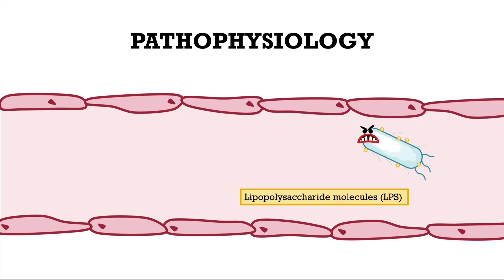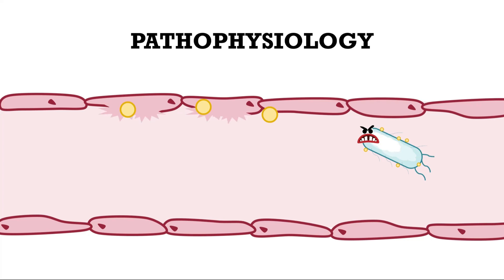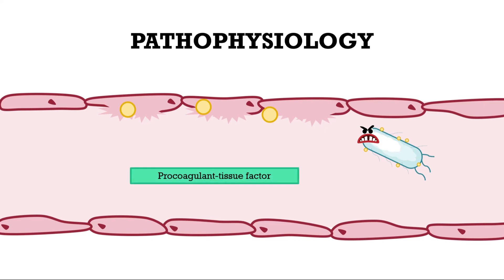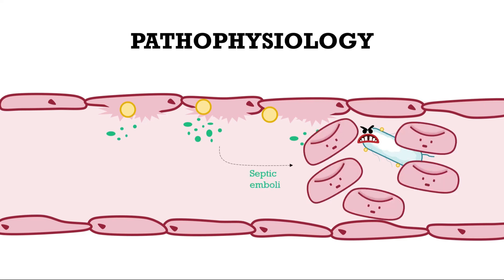Whatever the reason, if bacteria cause an infection leading to septicemia, these bacteria release endotoxins — also called lipopolysaccharide molecules — which damage endothelial cells of blood vessels. The result is the release of procoagulant tissue factor, which promotes blood clot formation in blood vessels. During infection, bacteria grow in these clots, forming septic emboli which can get lodged in vessels.